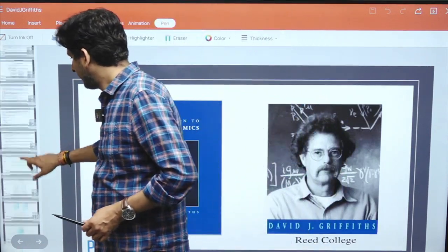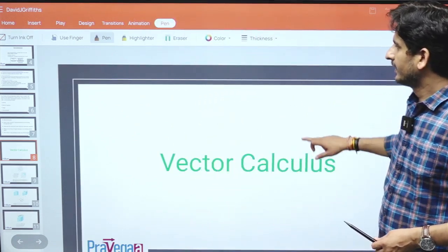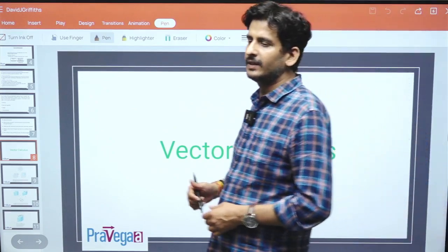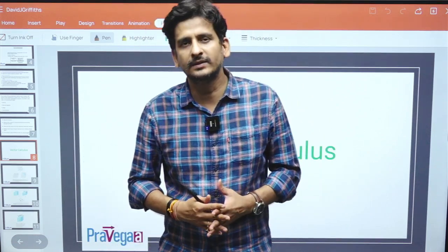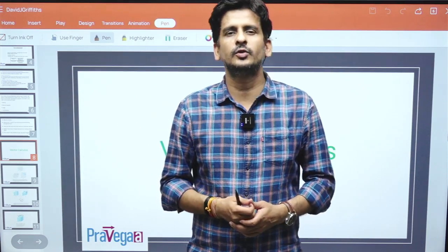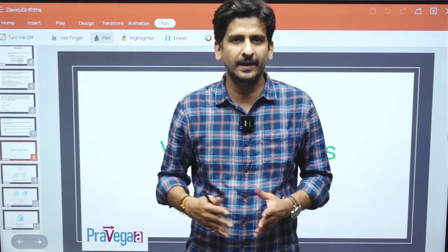The main chapter, the starting chapter in David J. Griffith, is about vectors and the vector calculus. This will form a foundation for you for the whole book, so you should be very much aware while reading this chapter.